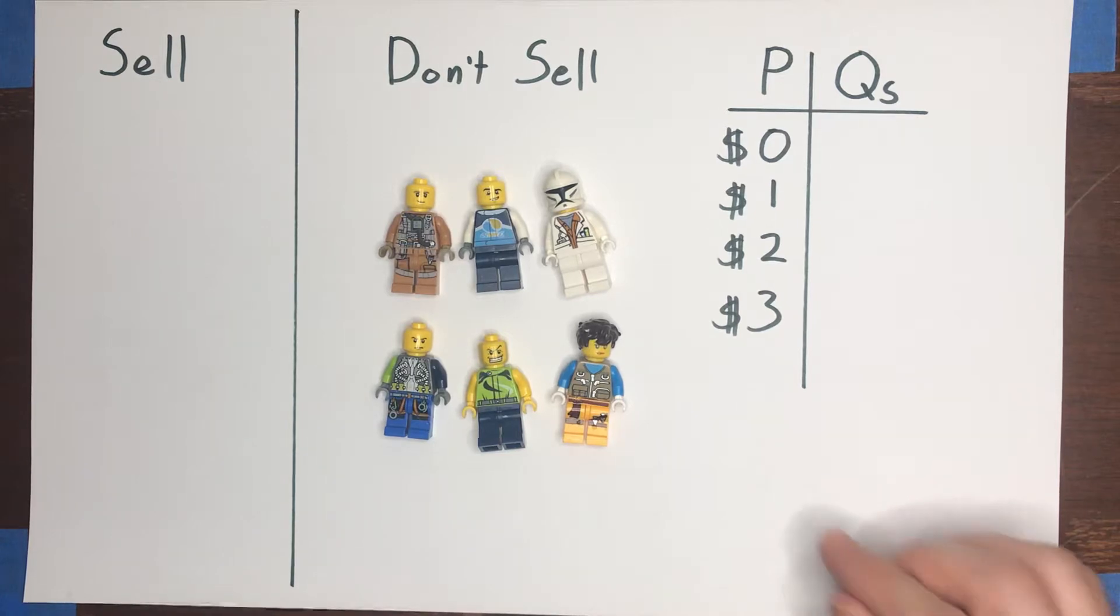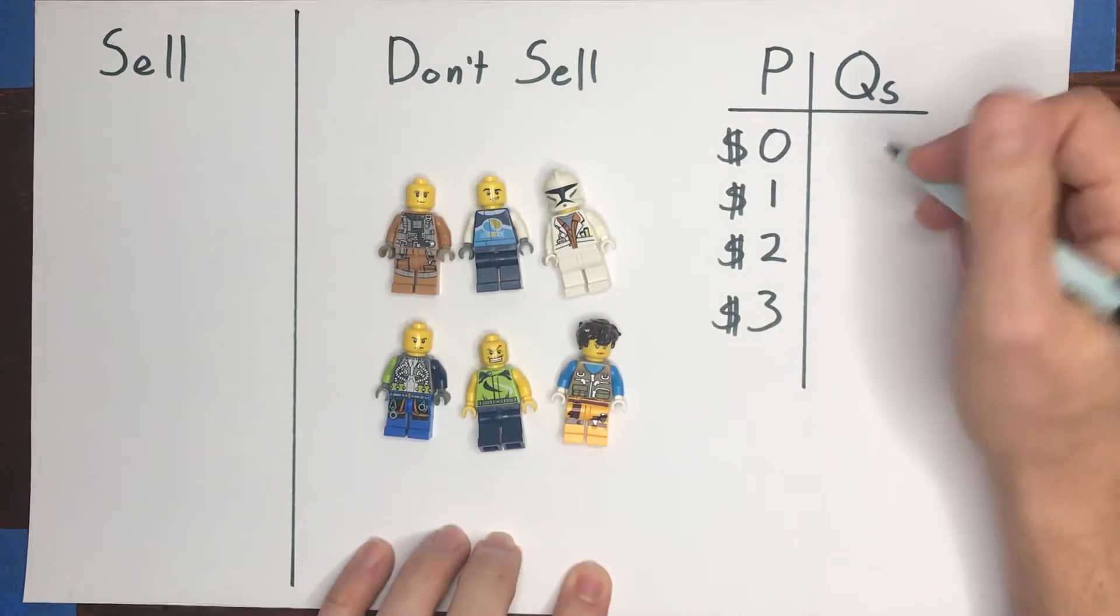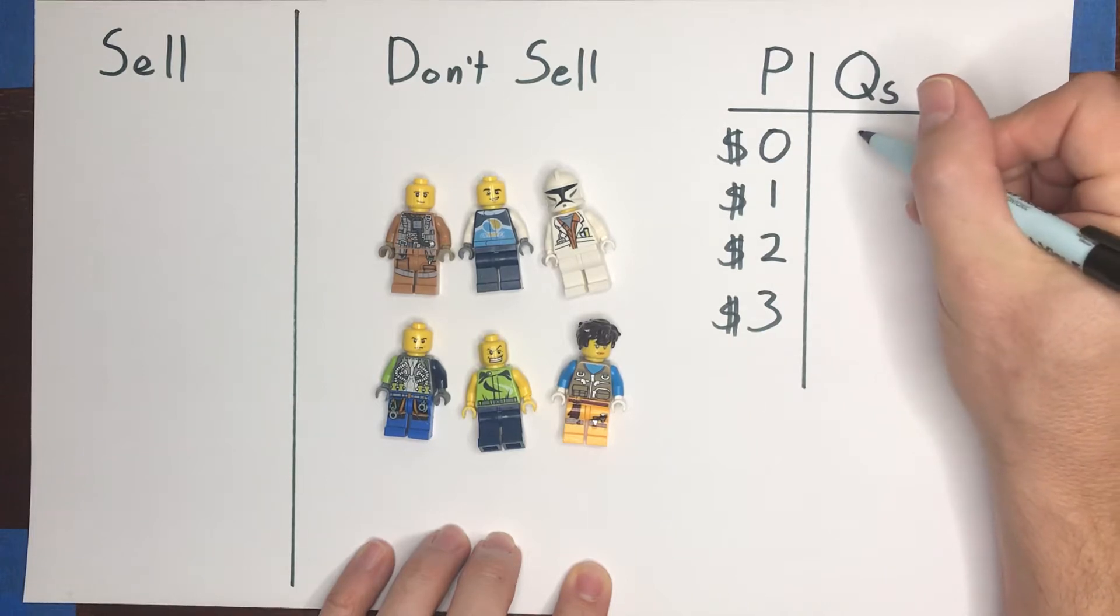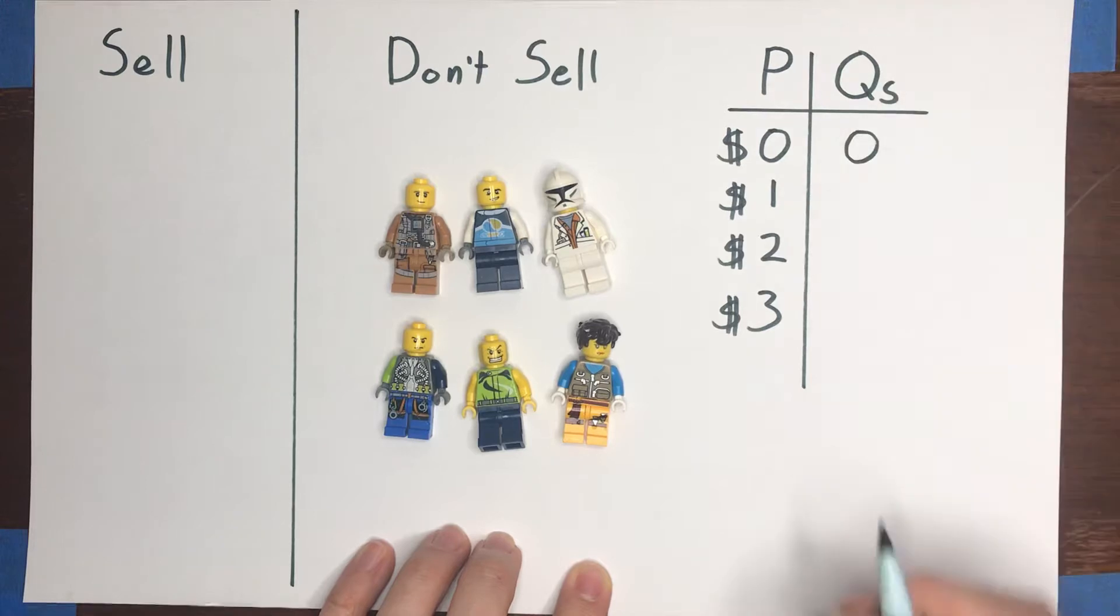Okay, so supposing that we started with a price of zero, good chance all of these people would want to keep the can that they already have. They're not going to give it away to you for free, typically. So the quantity QS, the quantity supplied, at a price of zero would be zero.